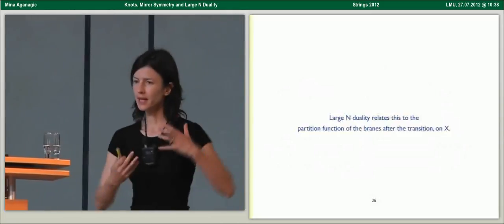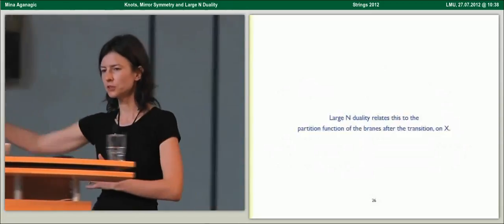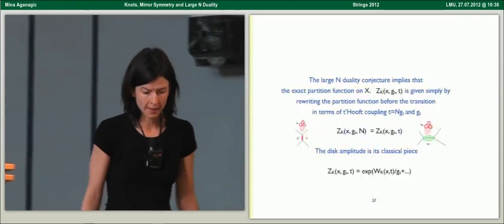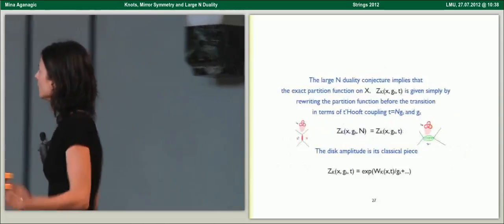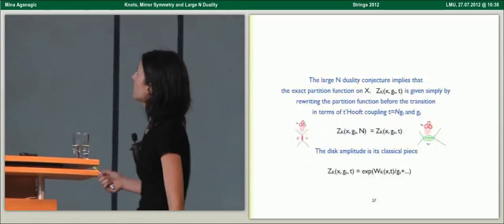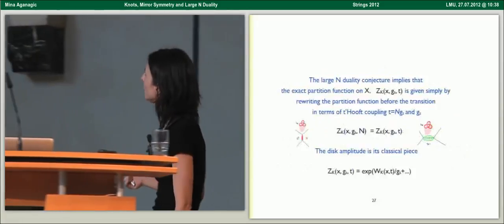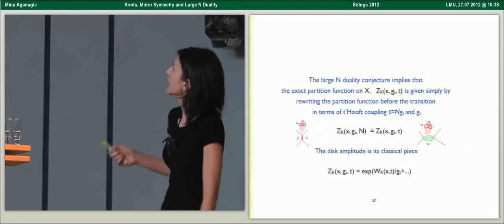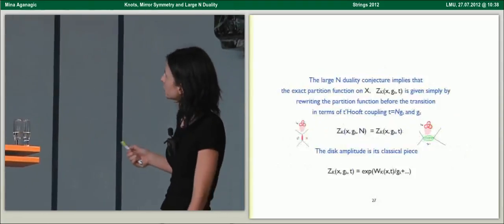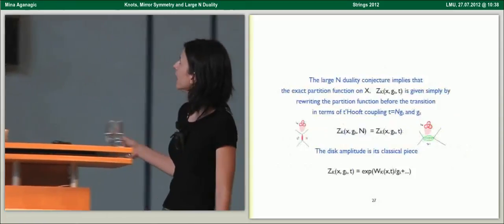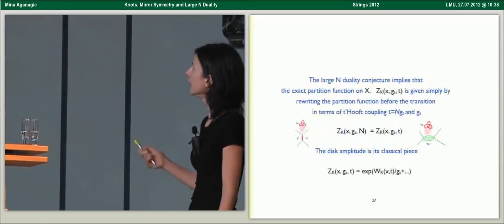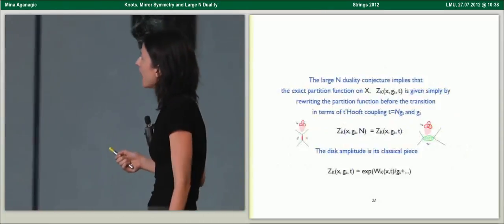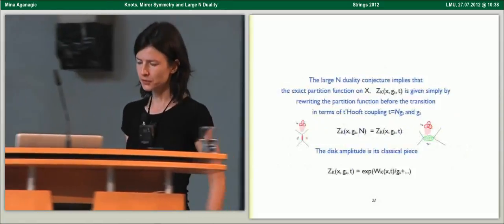Lagrangian duality will relate this partition function to the partition function of the branes after the transition. The Lagrangian duality in this context is a very simple statement: the partition function computed using Chern-Simons theory before the transition is exactly the same as the partition function after the transition. You just have to rewrite it in terms of the 't Hooft coupling and G-string. The disc amplitude is simply the classical piece of this at fixed 't Hooft coupling.